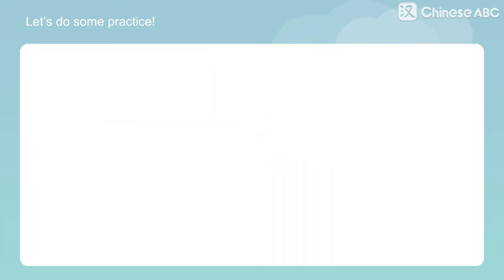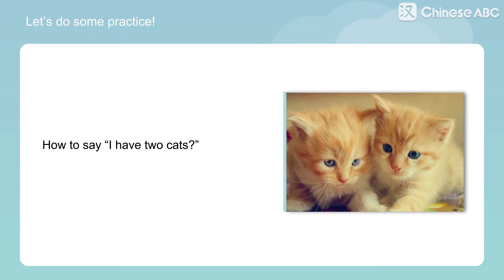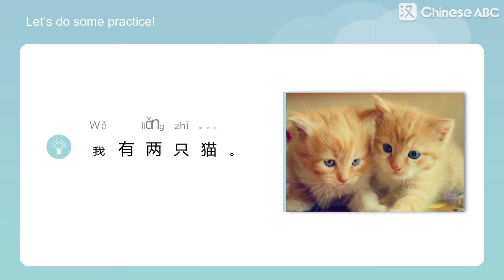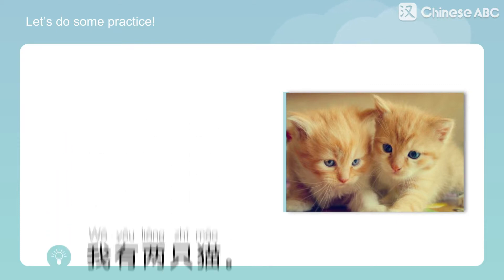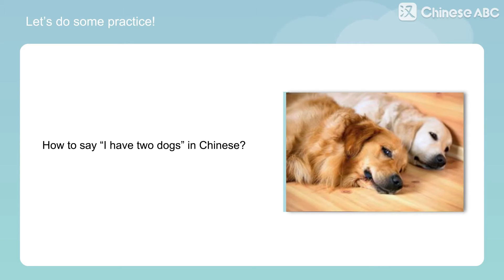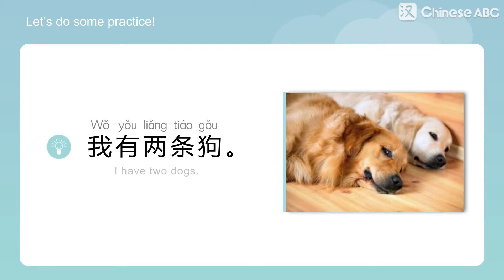Let's do some practice. How to say, I have two cats? 我有兩隻貓 — I have two cats. How to say I have two dogs in Chinese? 我有兩條狗 — I have two dogs.